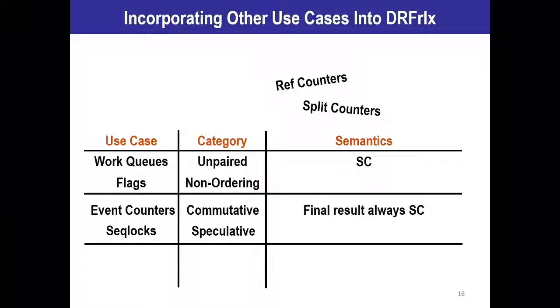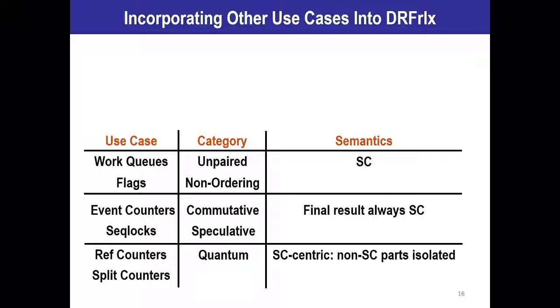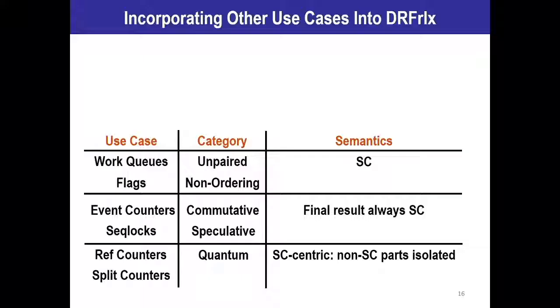The most complex use cases are ref counters and split counters. In these use cases, unlike the previous four, we are truly violating sequential consistency. When a programmer uses a reference counter or split counter with relaxed atomics, they're usually doing so with the knowledge that they won't get a sequentially consistent result. But what we found is that they're actually okay with this, because all they really want is an approximate answer — they only want to know, to an order of a thousand or ten thousand, what the current count in the system is. We exploit that with a new category called quantum, where we isolate the parts that need this approximate value to be returned from the remainder of the program. The result here is SC-centric but stronger than what existing models provide.